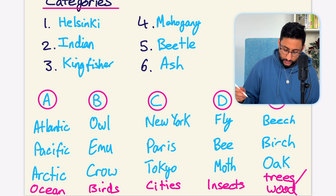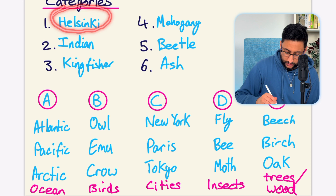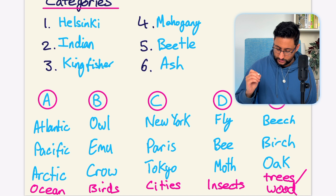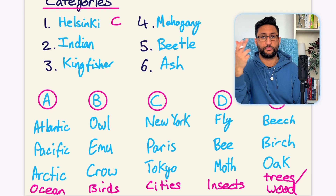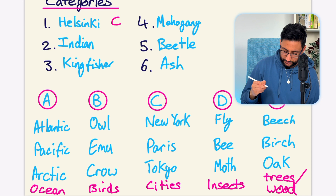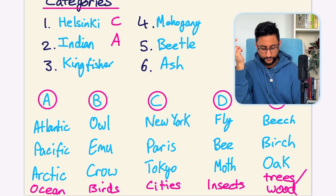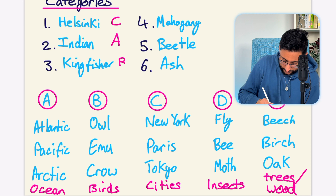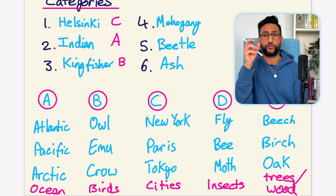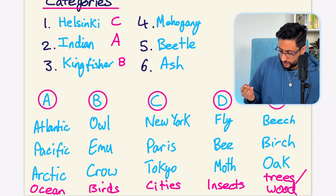Question number one, we have Helsinki. Your general knowledge should tell you that is the capital of Finland, so that's going to be category C — it's a city. Number two, we have Indian. This could be the ocean, a person, or a type of food, but looking at the categories, it can only fit into ocean. Number three, we have Kingfisher — it's not an ocean or a type of tree. You should know that the Kingfisher is a type of bird, so that's category B. Number four is mahogany. That is a type of dark wood but not a type of tree, so we can safely say category E is woods and not trees.